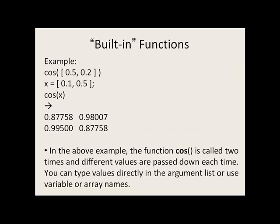Here's one example using the cosine function. We send down two values, 0.5 and 0.2, as input into the cosine function. When this is executed, we have two values returned as output, the cosine of 0.5 and the cosine of 0.2. We can also lump two values into an array, 0.1 and 0.5, and send this array down into cosine. We send two values down, we get two values back, the cosine of 0.1 and the cosine of 0.5.